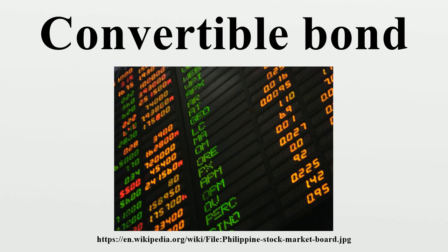The three biggest areas of subjectivity are: the rate of volatility used, since volatility is not constant; whether or not to incorporate into the model a cost of stock borrow for hedge funds and market makers; and the dividend status of the equity delivered if the bond is called, as the issuer may time the calling of the bond to minimize the dividend cost to the issuer.